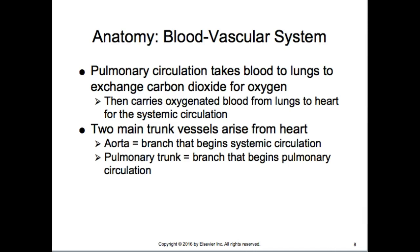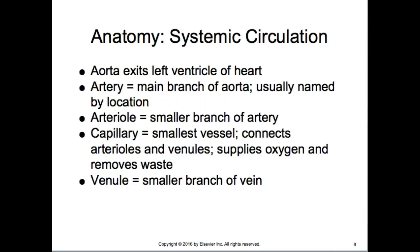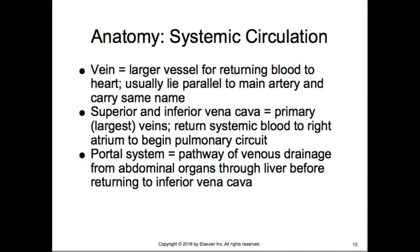The two main trunk vessels arising from the heart are the aorta and the pulmonary trunk. The aorta comes off the left ventricle and begins systemic circulation; the pulmonary trunk comes off the right ventricle and begins pulmonary circulation. Arteries are the main branches of the aorta, usually named by location; arterioles are smaller branches; then there are capillaries and venules. A vein is a larger vessel returning blood to the heart, usually lying parallel to the main artery and carrying the same name.